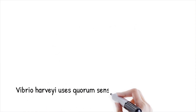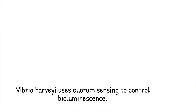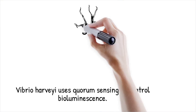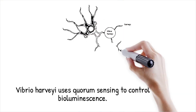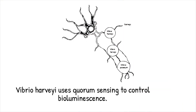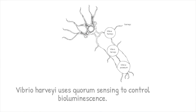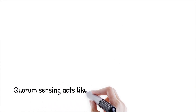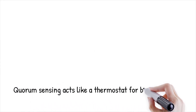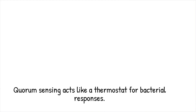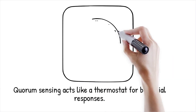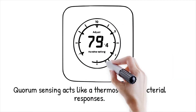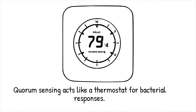In Vibrio harveyi, two distinct quorum sensing systems integrate environmental and population signals to finely tune bioluminescence. Quorum sensing mechanisms are like a thermostat that adjusts based on the number of people in a room, ensuring the right temperature or response at the right time.